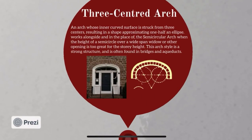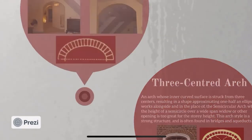And then came the three-centered arch. It is an arch whose inner curved surface is struck from three centers, resulting in a shape approximating one half of an ellipse. This arch style is a strong structure and is often found in bridges and arcades.